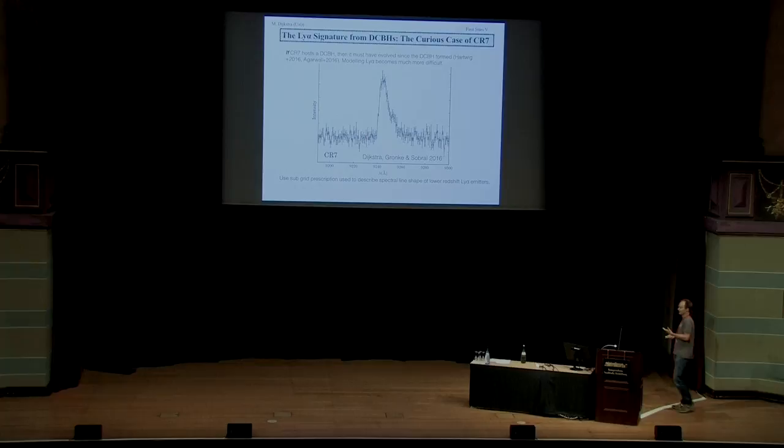So what you're seeing, you're seeing CR7 not as a direct collapse black hole, but already as a somewhat more matured black hole, which initially formed through direct collapse. Now the interesting thing is that if that is really true, then the Lyman-Alpha radiative transfer becomes much more difficult as I explained earlier, right? Then you do not have these pristine perfect conditions which simplify the radiative transfer.